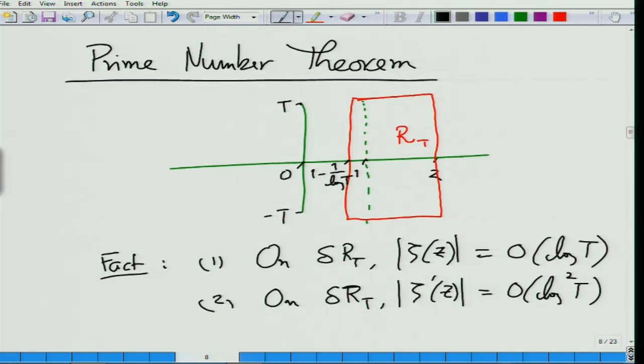So zeta(z) minus 1/(z-1) on the boundary — and the question was about the boundary or overall — and step 2 was: once you calculate the boundary it is pretty straightforward. So these are the two results that we will make use of.